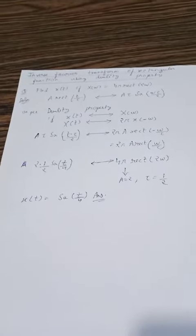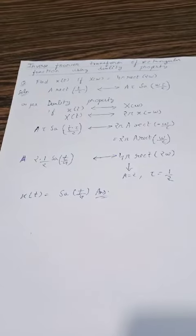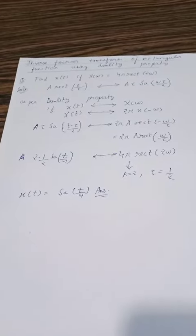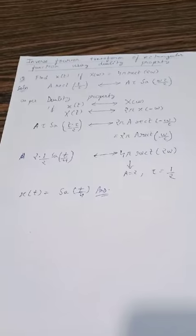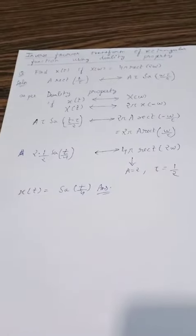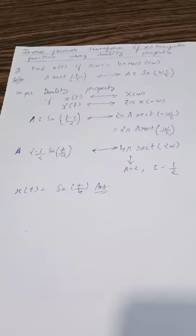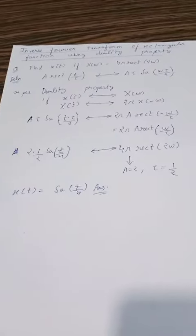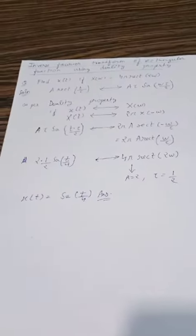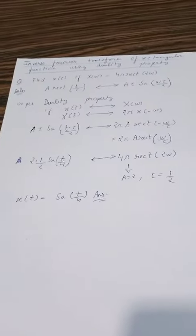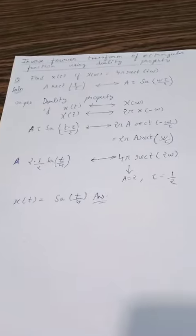In this video we will discuss a very easy method to find the inverse Fourier transform of a rectangular function using the duality property. The question says: find x(t) if X(ω) = 4π·rect(2ω). We are given a rectangular function in the Fourier domain and we have to find x(t).